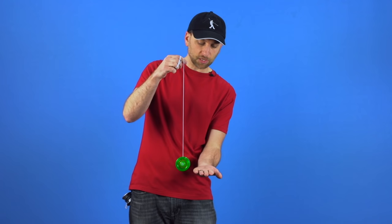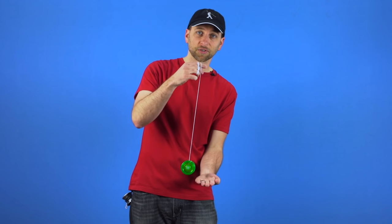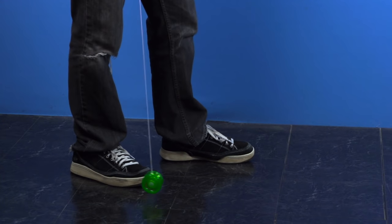All you're going to do is throw a powerful sleeper, and because the yoyo is spinning when it touches the ground, it starts to move. So you're going to use that motion to perform the trick.